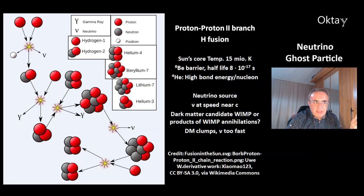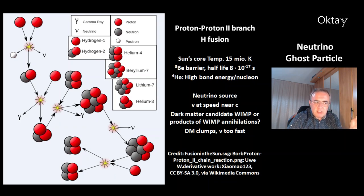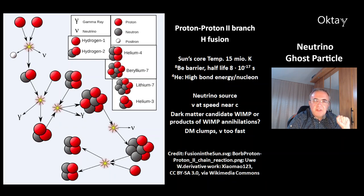The sun is a neutrino source. These neutrinos travel at very high speed, near the speed of light — that's 300,000 kilometers per second. It could be that neutrinos are a candidate for dark matter, the so-called WIMPs — weakly interacting massive particles. Or neutrinos could be the decay or annihilation products of WIMPs. However, there is one problem: dark matter exists in clumps, and neutrinos move too fast to form these clumps. This problem is not solved yet.